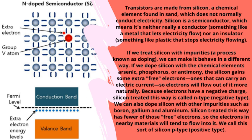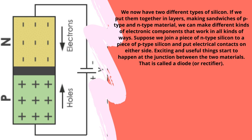Because electrons have a negative charge, silicon treated this way is called N-type (negative type). We can also dope silicon with other impurities such as boron, gallium, and aluminum. Silicon treated this way has fewer free electrons, so electrons in nearby materials tend to flow into it — this is P-type (positive type). If we put these two types of silicon together in layers, making sandwiches of P-type and N-type material, we can make different kinds of electronic components. Joining a piece of N-type silicon to a piece of P-type silicon with electrical contacts on either side creates a diode or rectifier at the junction.